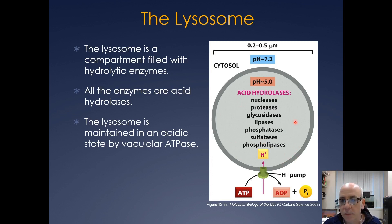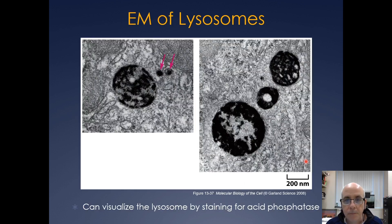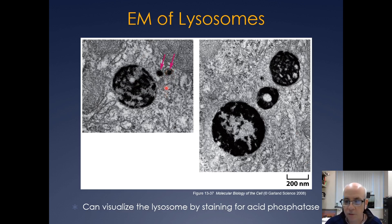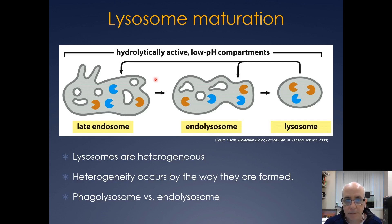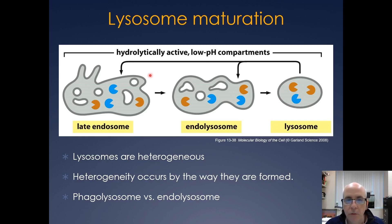The lysosome is used for a lot of the recycling happening in the cell, as well as breaking down foodstuffs brought into the cell. Here's an EM of some lysosomes — you can see them by staining for acid phosphatase, a phosphatase present there that functions at low pH. The lysosome undergoes maturation not unlike cisternal maturation, and they can be very heterogeneous and difficult to detect. The lysosome will fuse with the late endosome to form what is called an endolysosome.